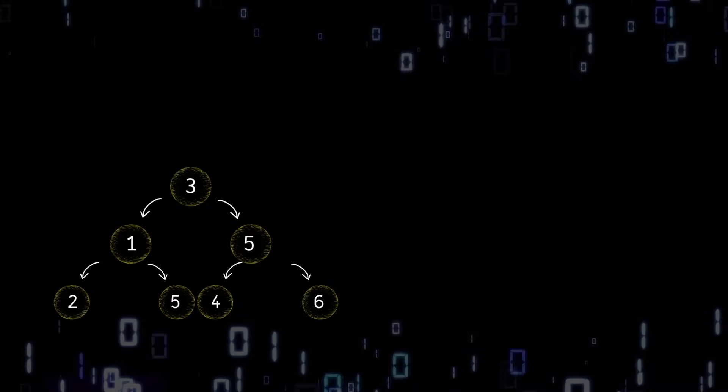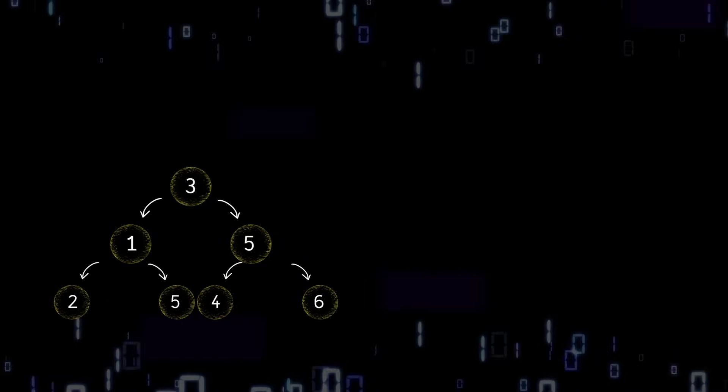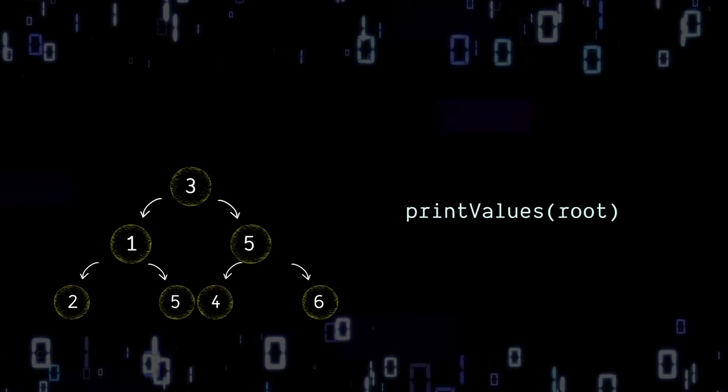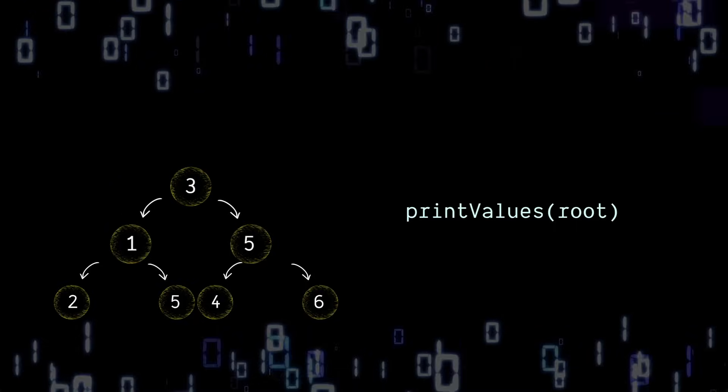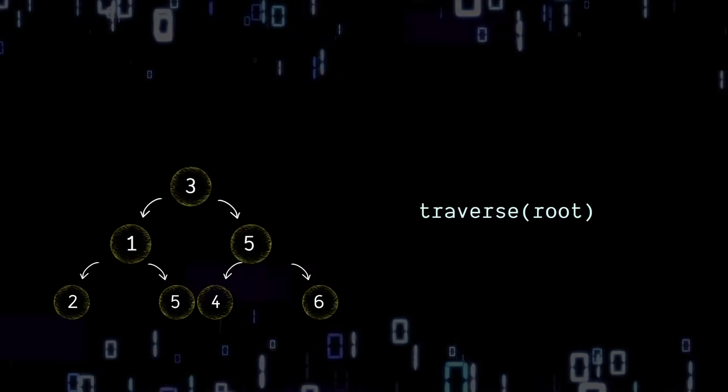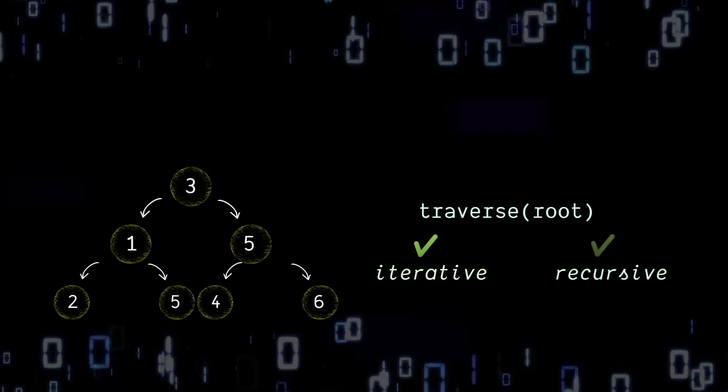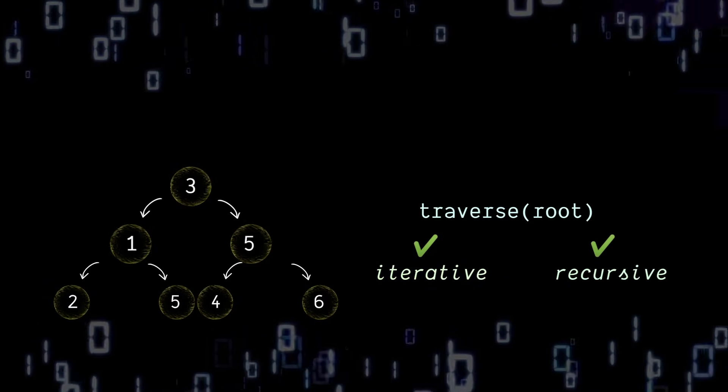So as you can imagine, if we're processing every node in the tree in some way, whether that's as simple as just printing out each node's value or something a bit more complex, we could choose to do this traversal iteratively with a while loop and an on pointer or recursively using the call stack.